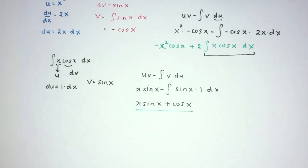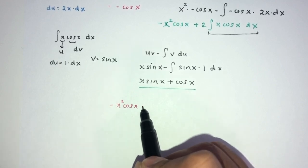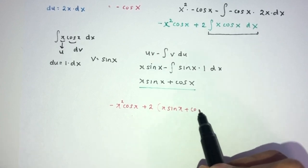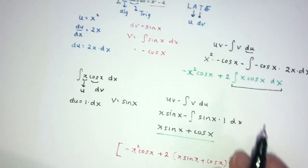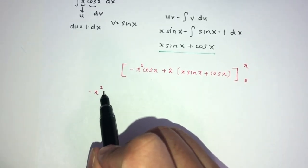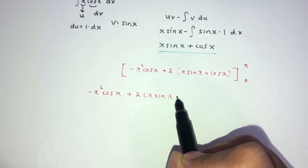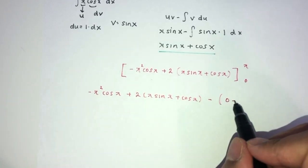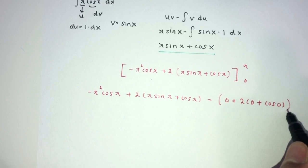As you can see, this whole expression became this result. Now we just have to replace this back in our main equation. So finally we will have minus x squared cos x, plus 2 times the result which is x sin x plus cos x. And we have to apply the limits, which are pi and 0. So at pi: minus pi squared cos(pi) plus 2 times [pi sin(pi) plus cos(pi)].